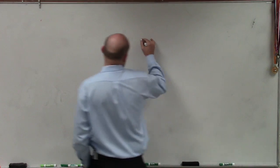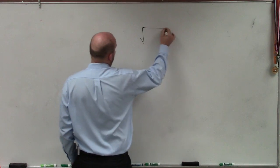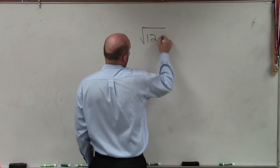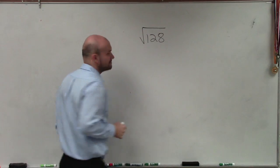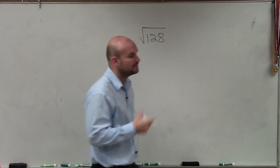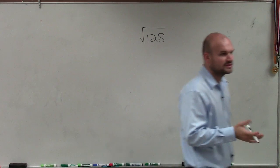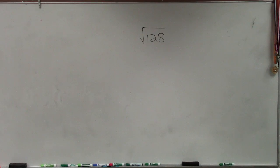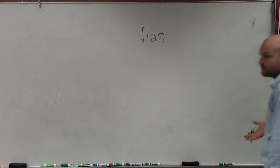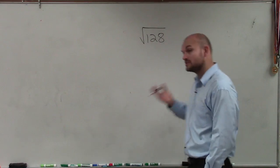Let's do an example of taking the square root of 128. There are a couple of ways to do this. The first way is prime factorization. If you can't figure out what square numbers go into this, then simply use prime factorization.